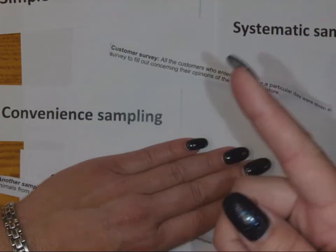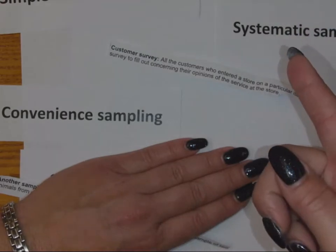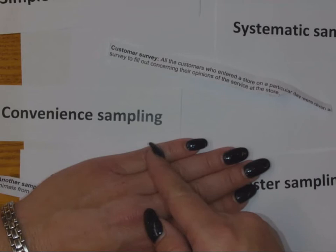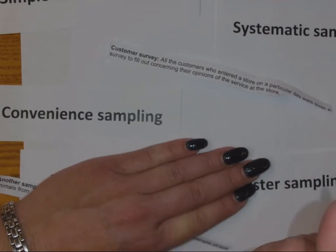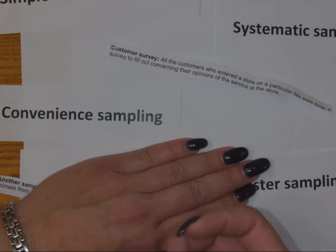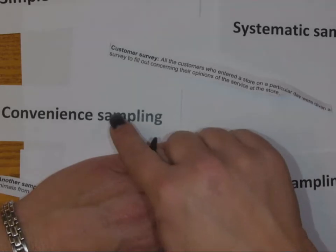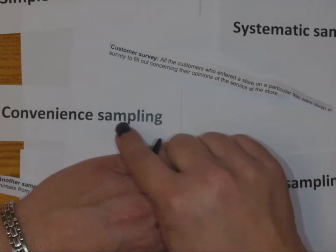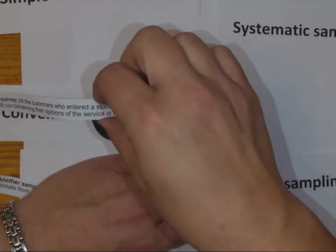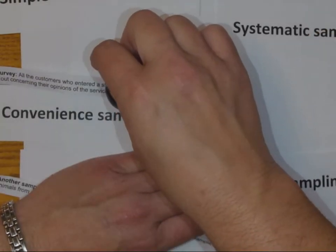Then we're down to systematic, which is where I've got some kind of a pattern, or convenience, which is where they all come to me. As I look at that I think I don't see any pattern there, it's not saying we're gonna look at the fifth or the ninth person or whatever. So this would be convenience sampling, all the people come straight to me and I get to survey them. Very convenient for me.